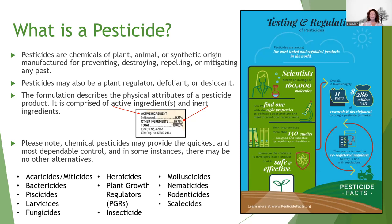Below that is a list of all the different types of pesticides: acaricides and miticides for mites and worms, bactericides for bacteria, piscicides that kill fish, larvicides for beetle larvae, fungicides, herbicides for plants, plant growth regulators, insecticides for insects, molluscicides for molluscs, nematicides for nematodes, rodenticides for mice and rats, and scalicides for scales. There are also some factoids about testing and regulation of pesticides.